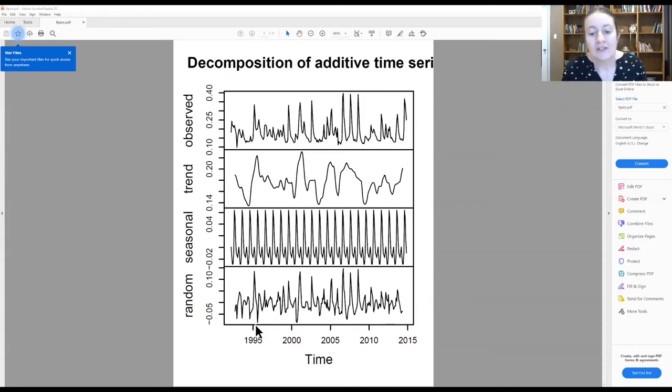What we have here on the top panel is our observed data, what we've been plotting all along. On the next panel down is our trend, which we've been calculating using a moving average. It looks bigger, but keep in mind these scale bars on the left are changing from panel to panel, so we're really zoomed in on that trend as it's moving through time.